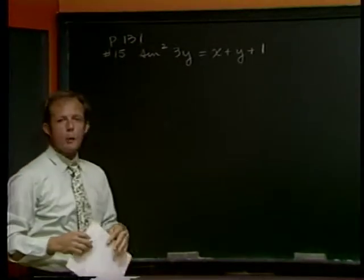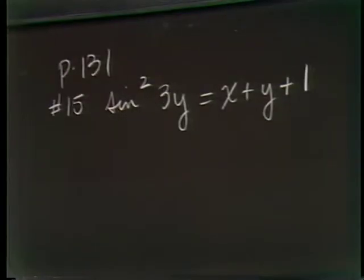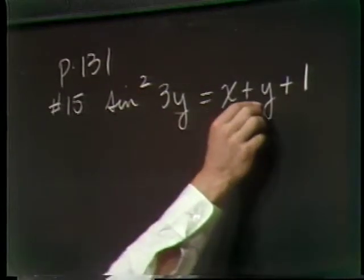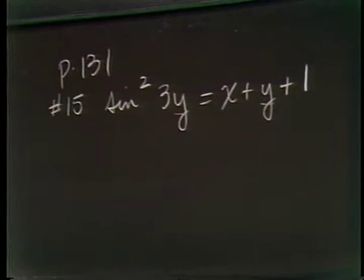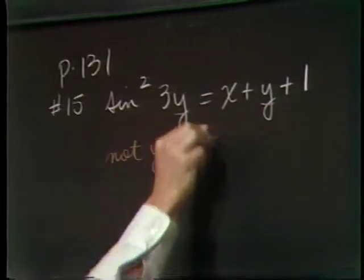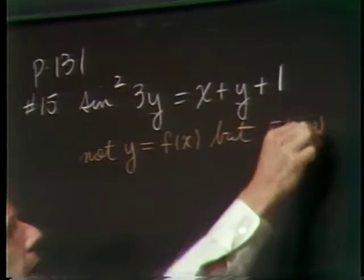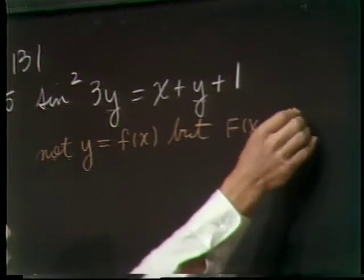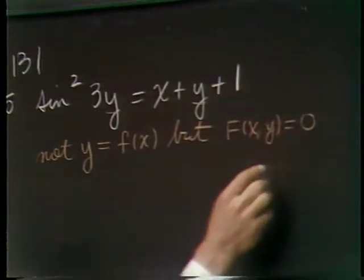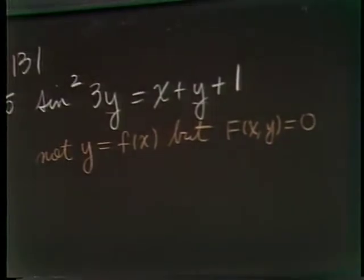Turns out this is actually a good warm up for the kinds of things we're going to do today. This is a problem where, at least from our point of view now, it's not possible to get y isolated on one side of an equation in order to get a derivative. It is not explicit, y is f of x, but it's what I call an implicit relationship between the two, f of x and y, some function equal to a constant or 0. Obviously, I can put it in this form by subtracting x, y, and 1 from both sides.